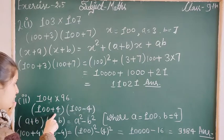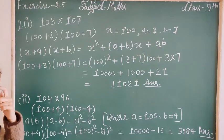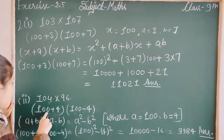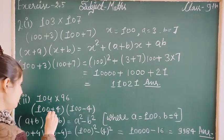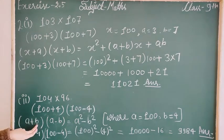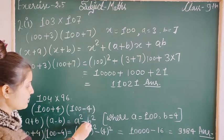100 is common in both terms. The formula for (a+b)(a-b) is a²-b². This is the difference of squares formula.